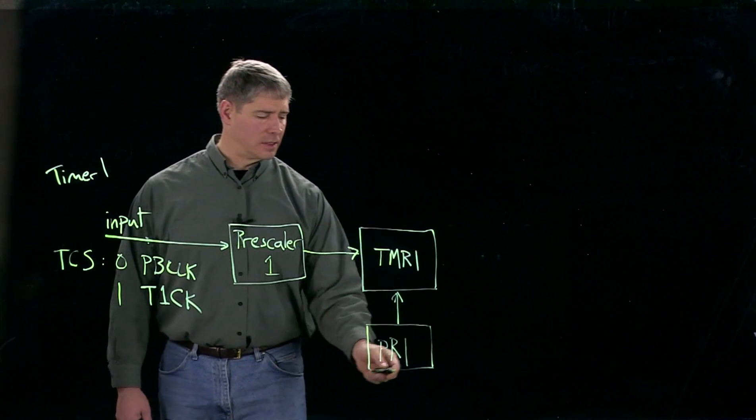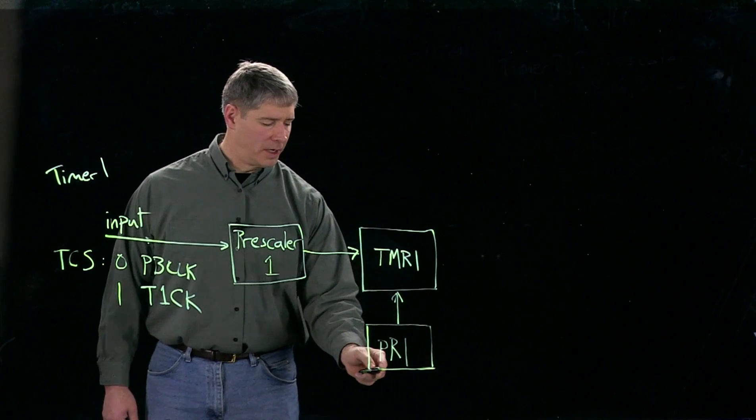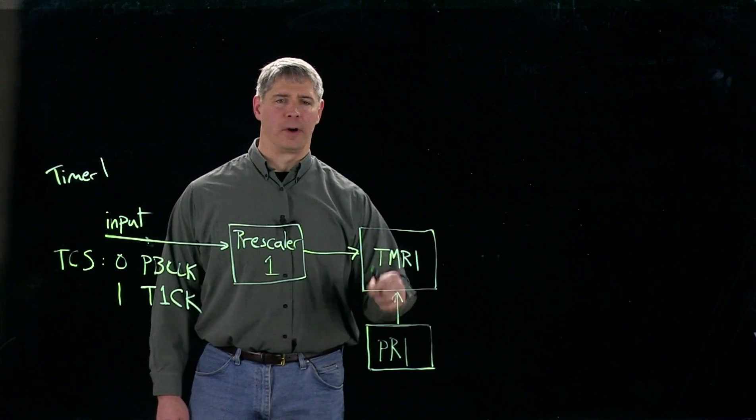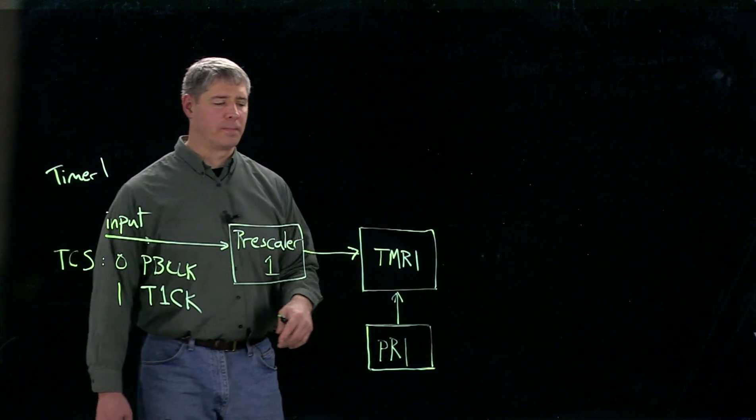If we don't set any value in there, it's going to default to 2 to the 16 minus 1, so it's going to let the counter count up all the way before rolling over.